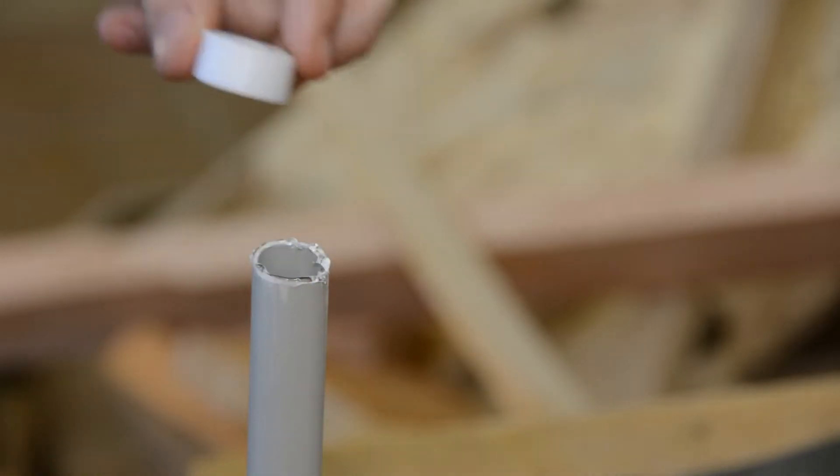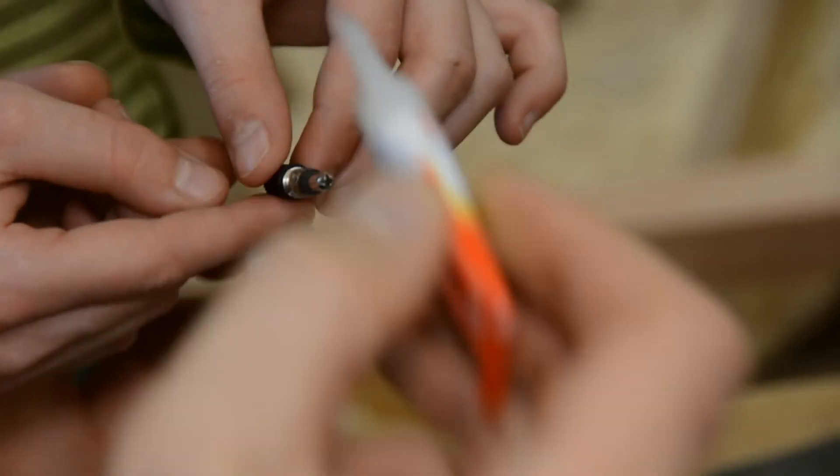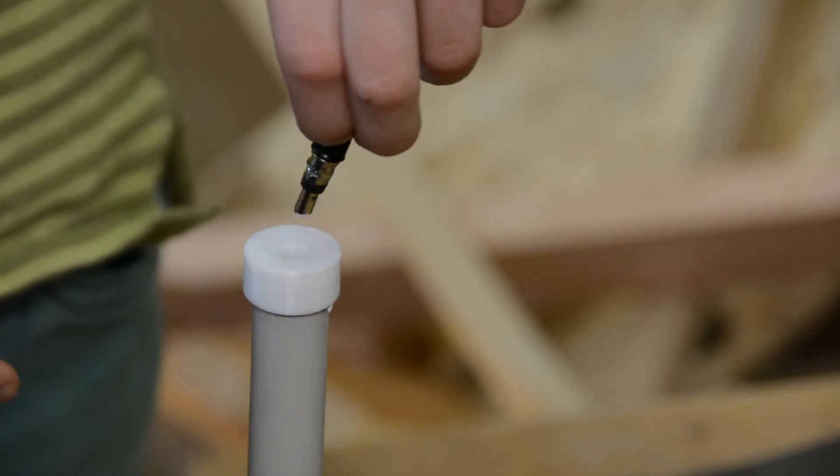This end is then closed with a 3D printed cap. The cap is secured with a bit of superglue and then gently tapped on the pipe with a few hammer blows. Superglue should not be handled by kids, so we took over this step and they prepared the pipe and 3D printed parts. In the hole of the cap we glue a bike valve.